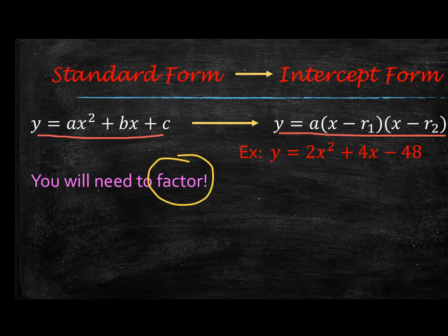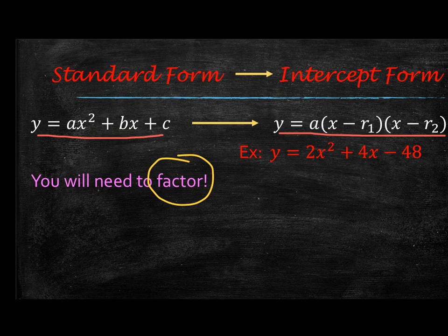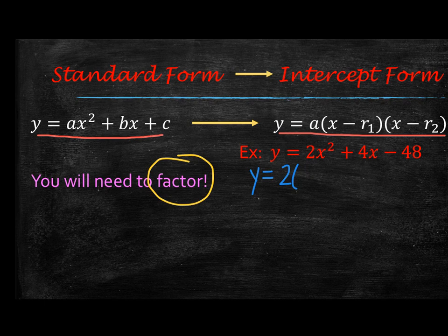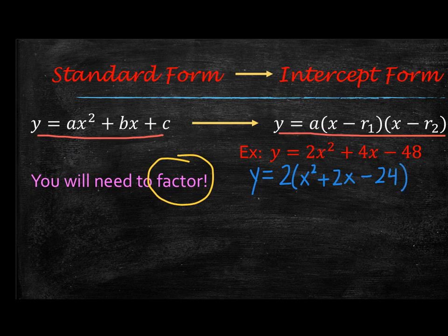You can use any of those methods that we talked about with factoring, so let's go ahead and get started with this example. The first thing that I recognize when I'm looking at this quadratic is that it has a GCF of 2. So I'm going to first factor out the 2. So y equals 2 parenthesis. When I divide the first term by 2, I get x squared. When I divide the second term by 2, I get plus 2x. And when I divide that last term by 2, I get minus 24.